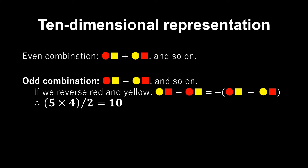There are five choices of color for the circle. For each of these choices, we have four choices of color for the square. It appears that we have 5 by 4 equals 20 combinations, but we must divide by 2 to avoid counting twice. So altogether we have 20 over 2 equals 10 odd combinations.